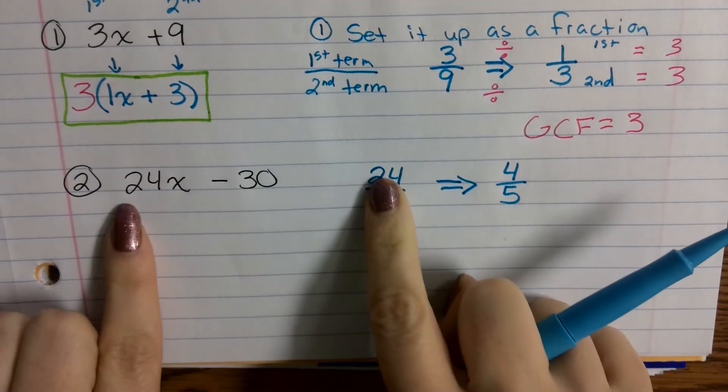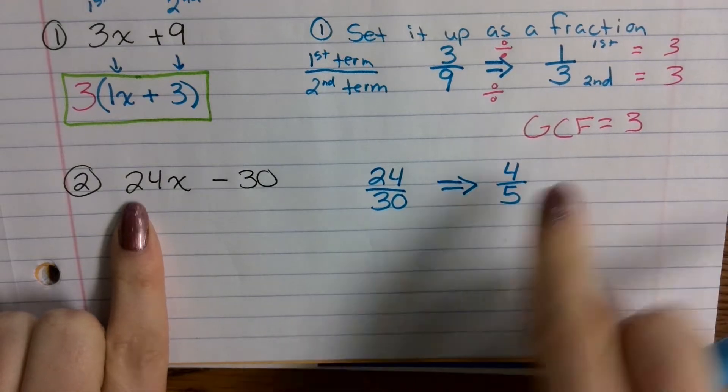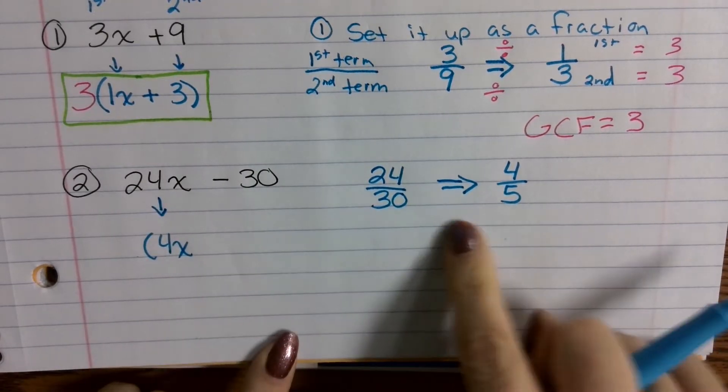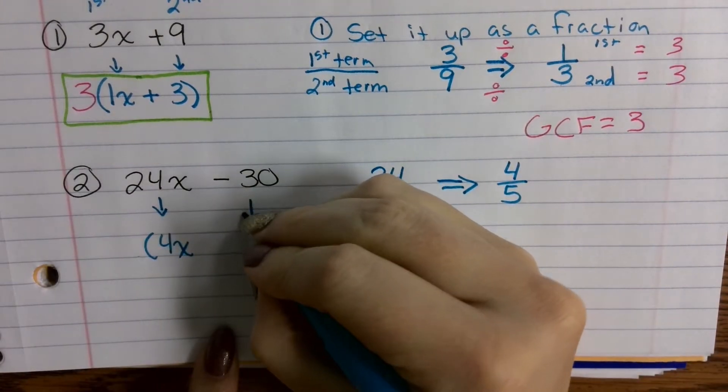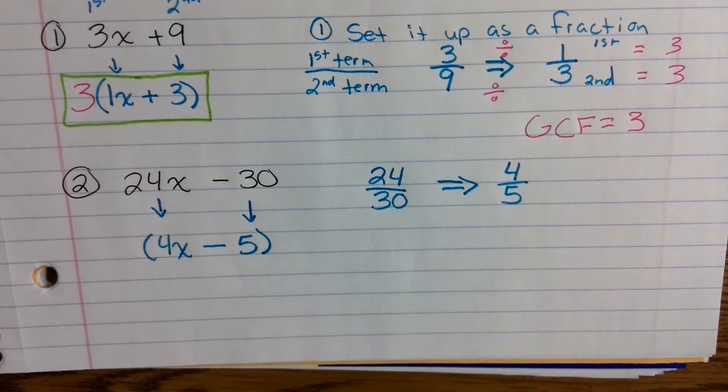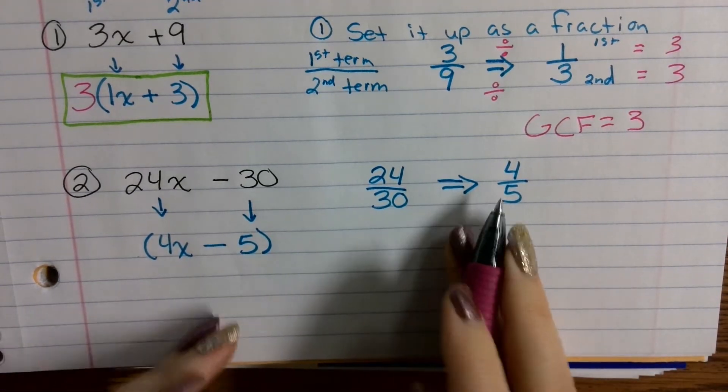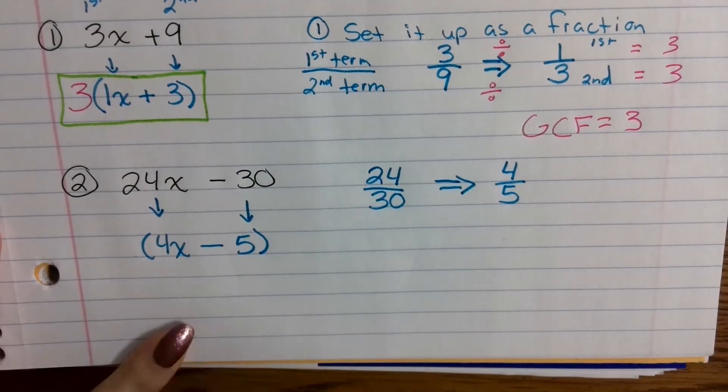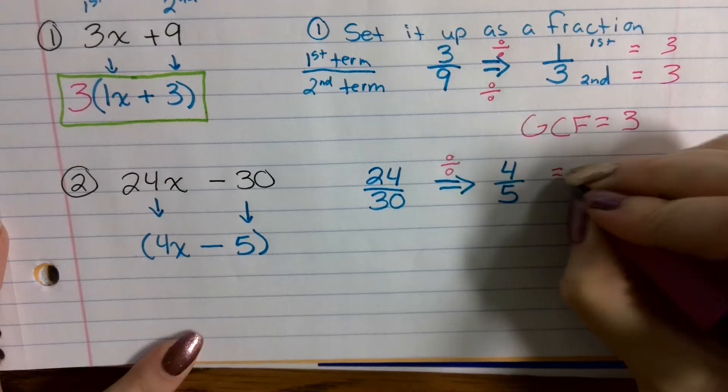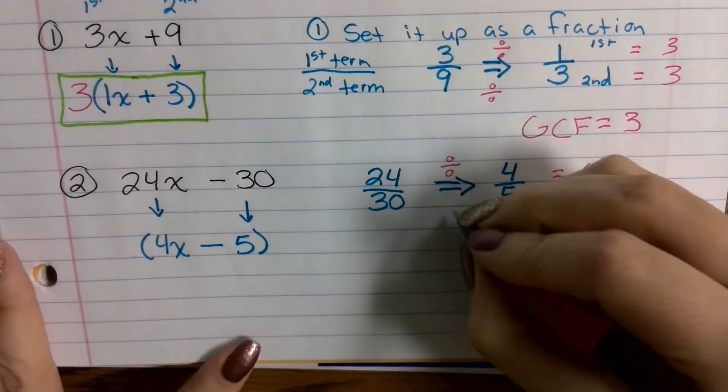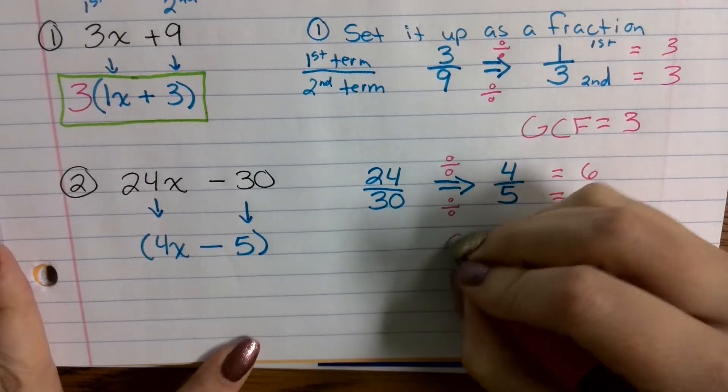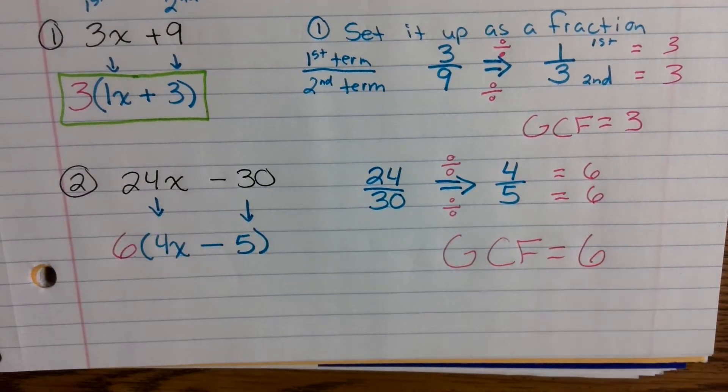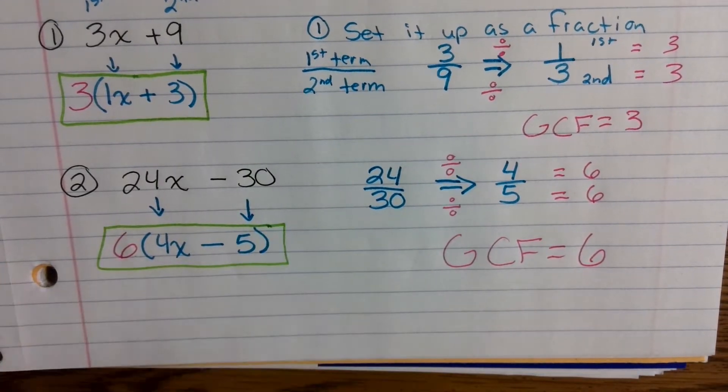So 24 now became a 4. So instead of 24x, I'm going to put 4x. 30 became a 5. So instead of minus 30, I'm going to put minus 5. That's my inside. Now let's figure out what the greatest common factor was that we had to use to pull the numbers out. How do we figure out the greatest common factor here again, Jalen? That's it. We're going to divide 24 by 4, which gives us 6. If you want to double check, you could do 30 divided by 5. It also gives you 6. So your greatest common factor was 6. That's what's going to come on to the outside.